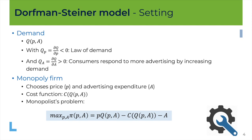How do we solve this problem? We will look at the first-order conditions for the two choice variables — for the price and the advertising — and from there we will derive what we can call a law that will determine how the monopolist chooses both price and advertising.